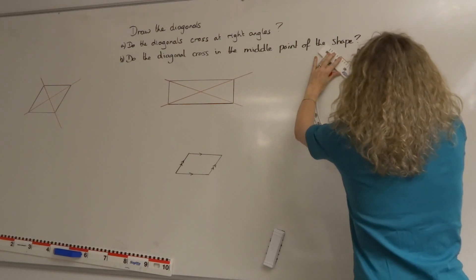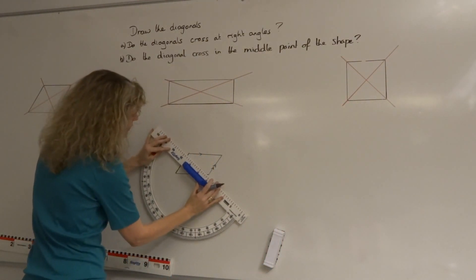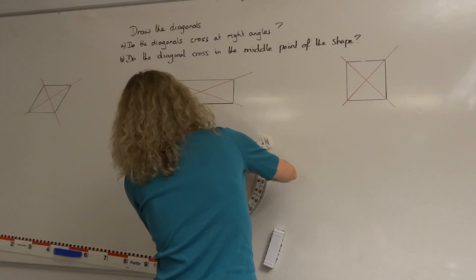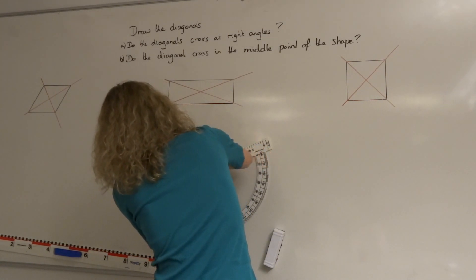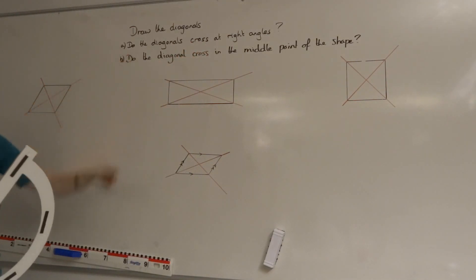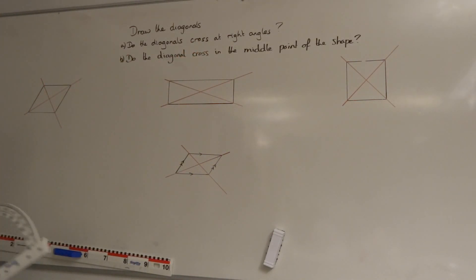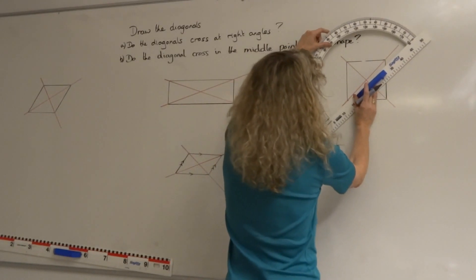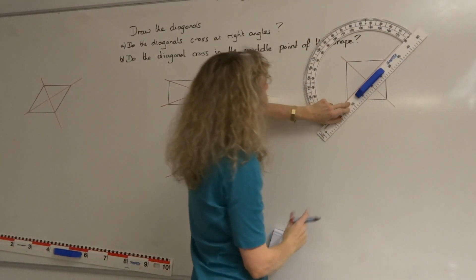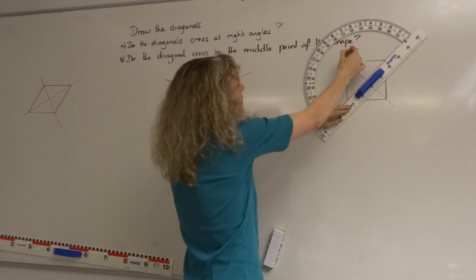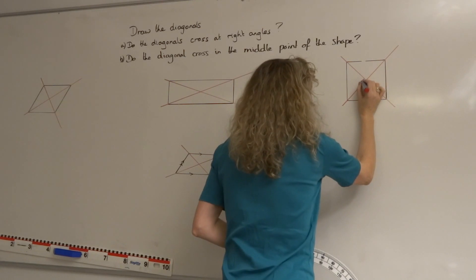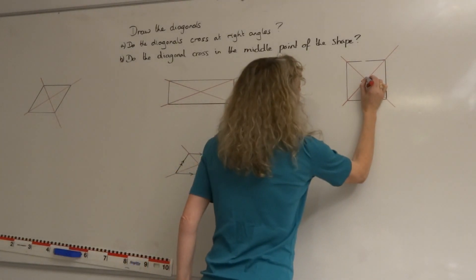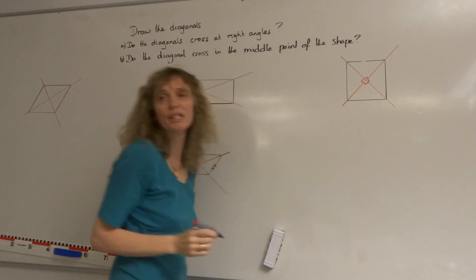Once we've drawn our diagonals, the first question is: which of the diagonals cross at right angles? We can see that in the square that looks very much like a right angle. If we measure this with a protractor, we can see it extends to 90 degrees. So the square definitely has a right angle in the middle — it's made up of four right angles where all the diagonals cross.